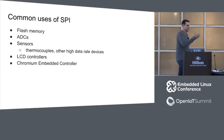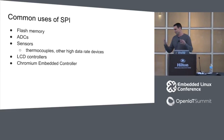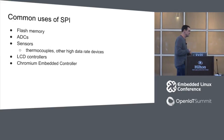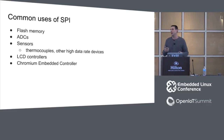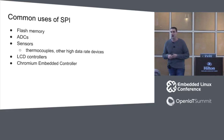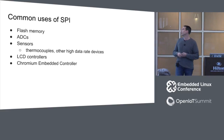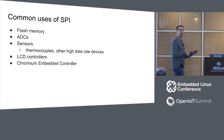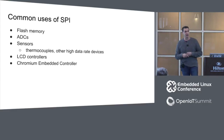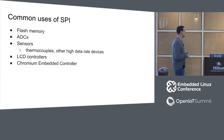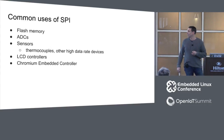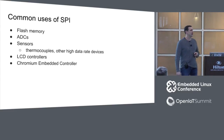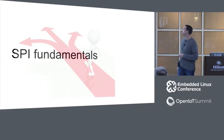Let's talk about common uses of SPI. As embedded Linux engineers, you've probably seen some of these. Flash memory is a big one — a lot of SPI flashes. Analog-to-digital converters are very popular. There are a lot of sensors, thermocouples in particular. LCD controllers. The Chromium embedded controller has a SPI interface. A lot of these have one characteristic in common: they're relatively high data rate peripherals compared to I2C peripherals.